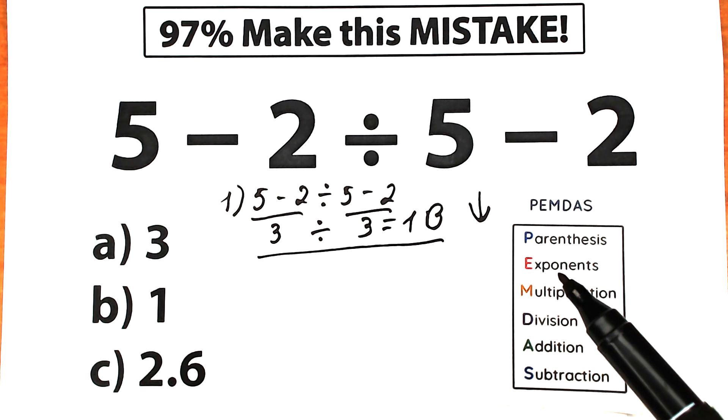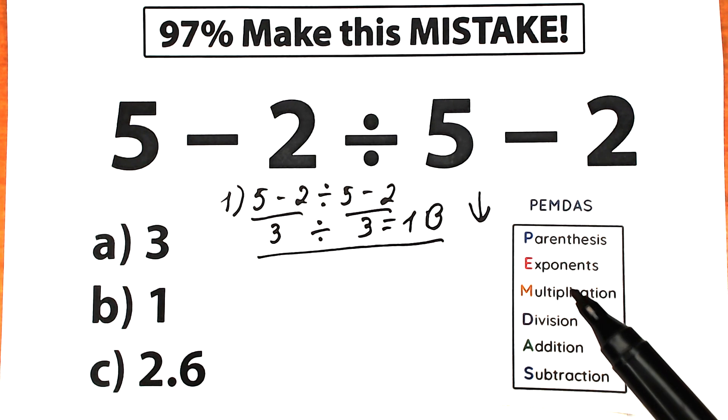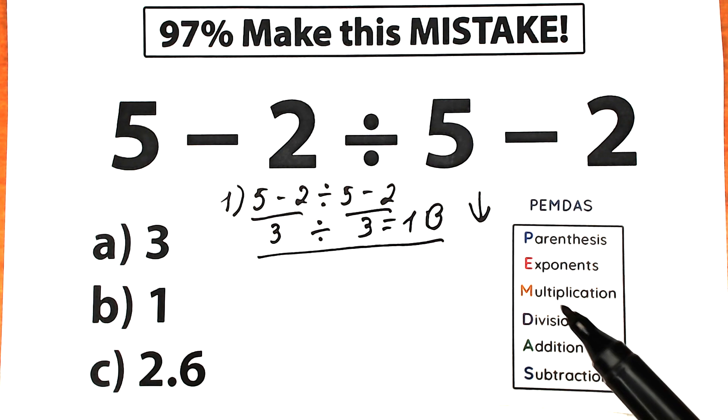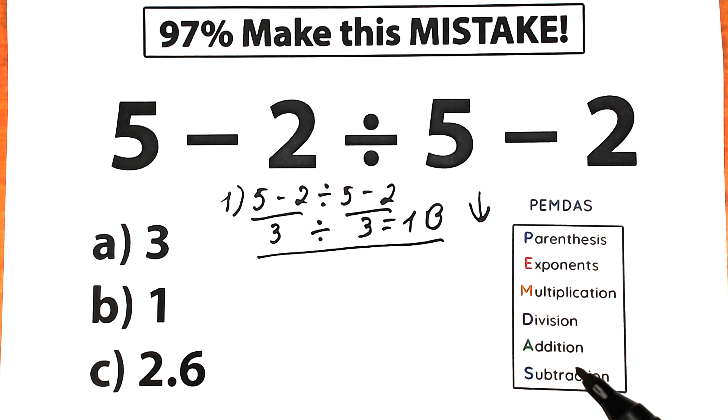Next is exponents — like 5 squared or 5 cubed. Then comes the multiplication and division group. The last step is the addition and subtraction group.